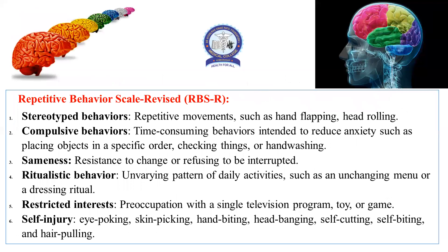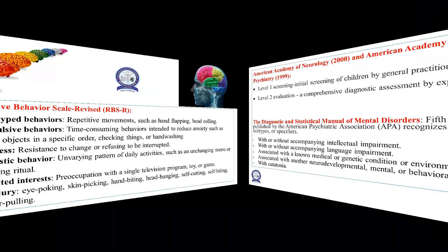The Repetitive Behavior Scale-Revised (RBS-R) has six criteria: first, stereotyped behavior like repetitive movements such as hand flipping and head rolling; second, compulsive behavior like time-consuming behaviors to reduce anxiety, such as placing objects in a specific order, checking things, or hand washing; third, sameness — resistance to change or refusing to be interrupted; fourth, ritualistic behavior — unvarying daily patterns such as an unchanging menu or dressing rituals; fifth, restricted interest — preoccupation with a single television program, toy, or game; and sixth, self-injury — eye poking, hand biting, head banging, self-cutting, or self-hitting.